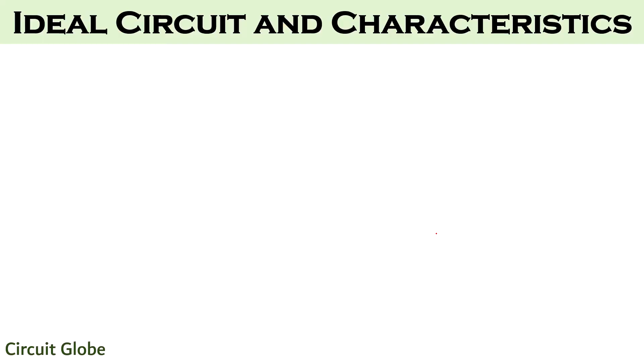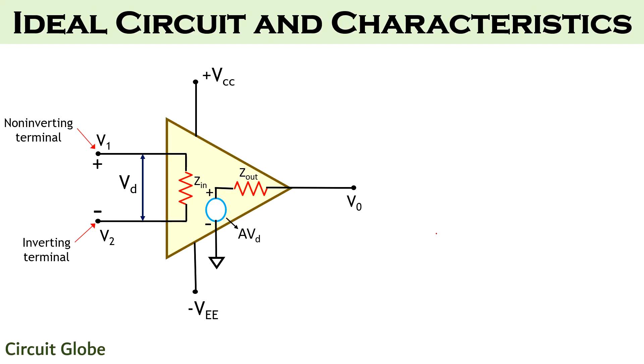Let us now proceed to check the ideal circuit and the various characteristics that the operational amplifier exhibits. Here we have an ideal circuit of an operational amplifier. The two inputs V1 and V2 are provided at the non-inverting and inverting terminal of the amplifier respectively. The non-inverting terminal is the one with positive sign and the inverting terminal is the one with negative sign. Operational amplifiers exhibit high input and low output impedance and can amplify signals up to 1 MHz.